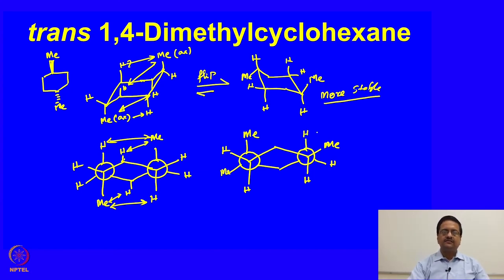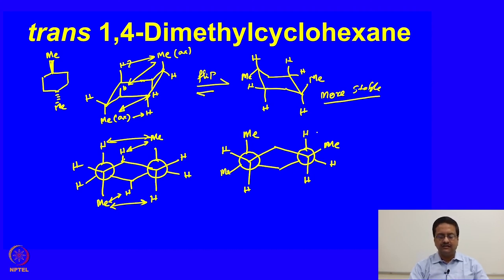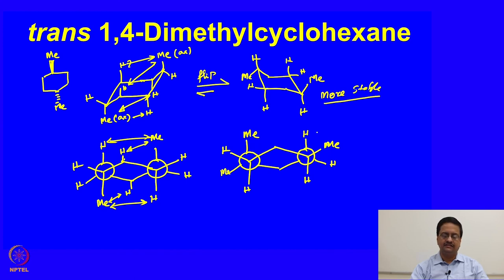In this lecture we have understood the conformations of disubstituted cyclohexane derivatives and how to draw them in chair form, how to convert those chair conformations to the Newman projection, and calculate interaction energies based on the interactions present. I would like you to go through the textbook, get the energy values for 1,3-diaxial interactions and the n-butane gauche interactions, and calculate yourself to find the energy values associated with these conformational differences. With this we conclude this lecture and will continue from here. Thank you.